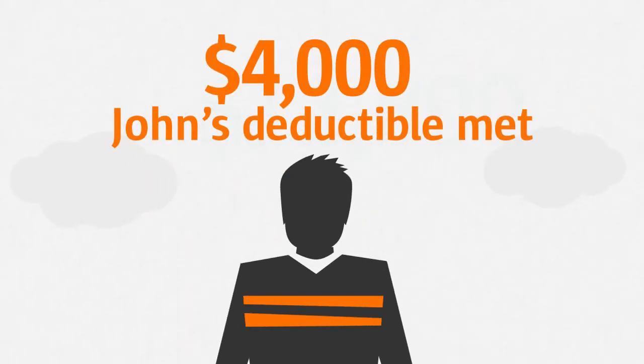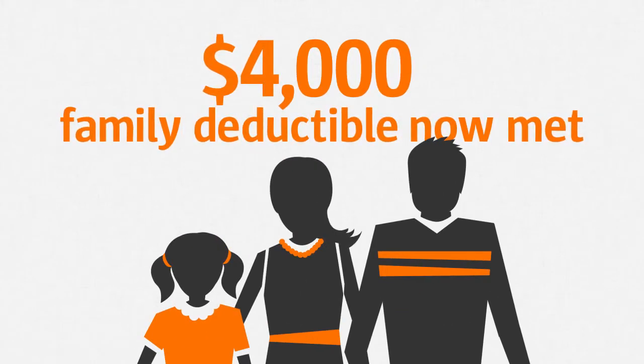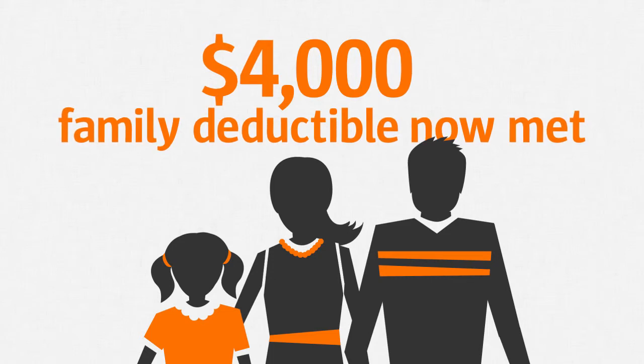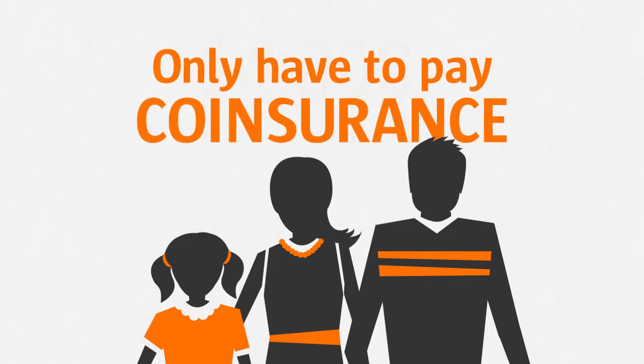Plus, since John's deductible has now been met, everyone in John's family is considered to have met the deductible. So John and his entire family only have to pay co-pays and co-insurance until reaching their out-of-pocket limit.